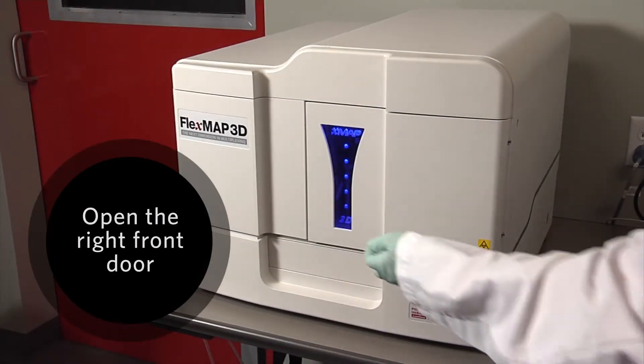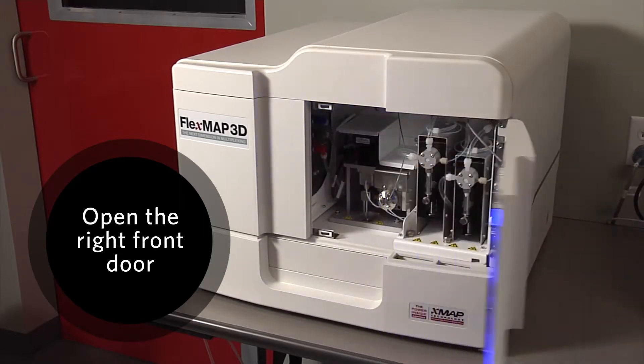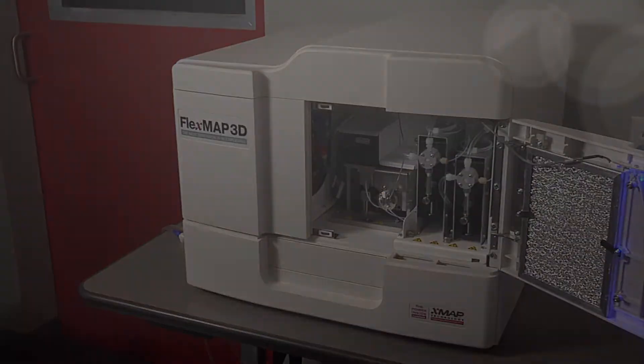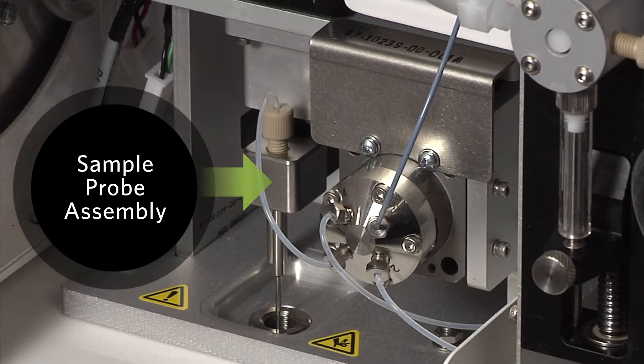To remove the sample probe, open the right front door of the FlexMap 3D instrument. Locate the sample probe assembly.